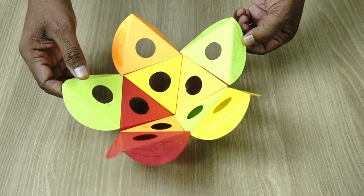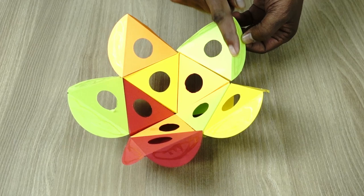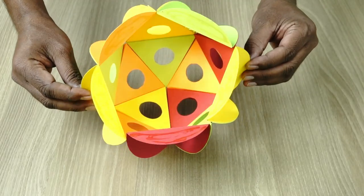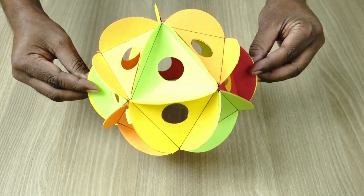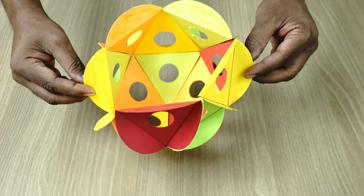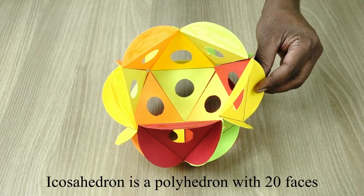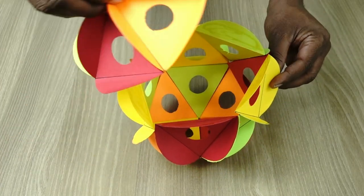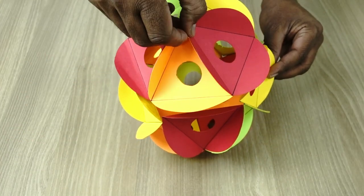In the middle, we are going to attach the rest of the circles or the triangles if you want to call them. And we are going to attach the 10 circles in the middle, 5 on the top and 5 at the bottom, together making it 20 sides. Just see how beautiful the platonic solid has turned up.